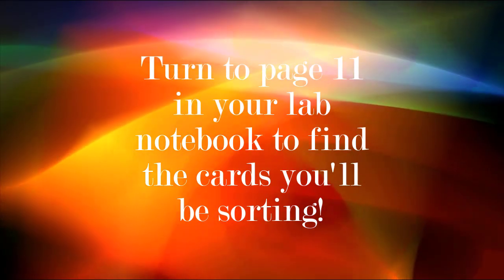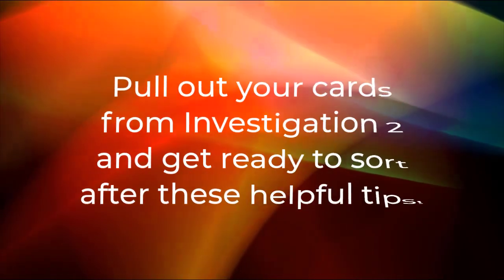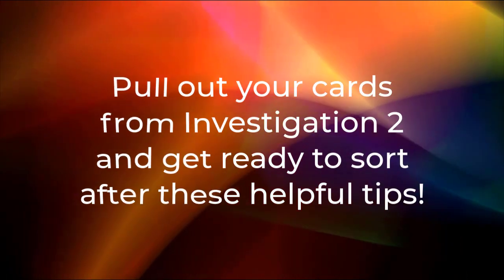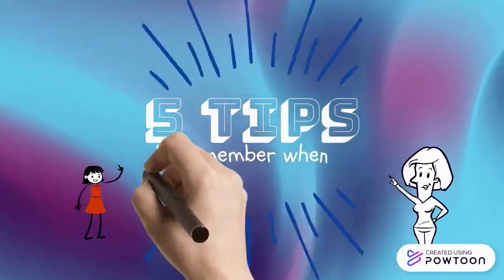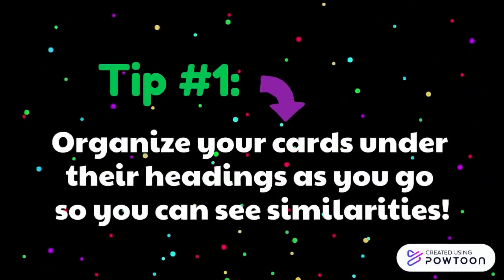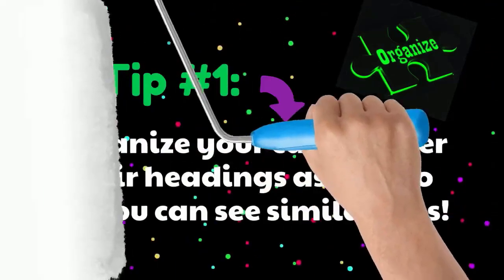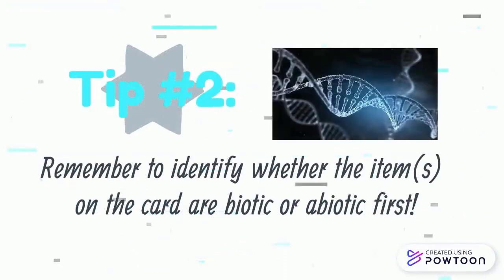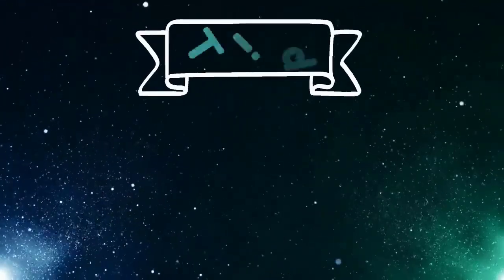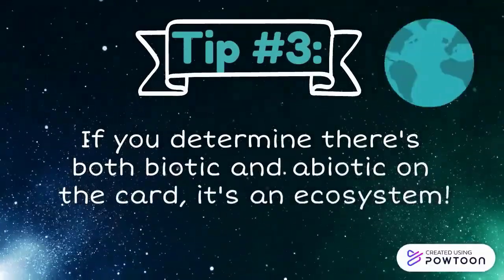Turn to page 11 in your lab notebook to find the cards you're going to be sorting. Pull out your cards from the Investigation 2 section and get ready to sort after these helpful tips. Before you get started with your card sort, here are five tips to remember. Tip one: lay your cards out under their headings as you go so you can see the similarities to the cards you're attempting to sort. Tip two: remember to identify whether the item or items on the card are biotic or abiotic first. Tip three: if you determine there's both biotic and abiotic on the card, it's an ecosystem.